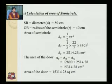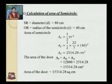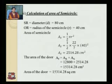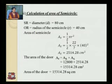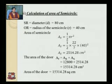Now, calculation of area of semicircle. Here, diameter is 80 cm, therefore radius is 40 cm. Area of semicircle AS is given by 1/2 pi r squared. Therefore, AS equals 1/2 into 22/7 into 40 squared. Therefore AS equals 2,514.28 cm squared.